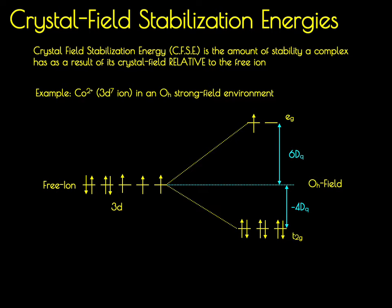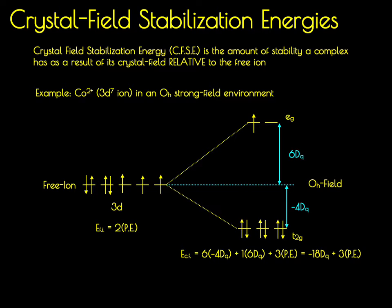In addition to those energies, we also have to consider an additional energy term: the pairing energy. Every time we place two electrons in the same orbital, we're going to have pairing energy associated with that. The free ion has an energy equal to two times the pairing energy. In the case of the octahedral field, the energy provided by the crystal field equals six times negative 4dq for the six electrons in the T2g orbitals, plus one times 6dq for the one electron in the Eg orbitals, plus three times the pairing energy — giving minus 18dq plus three times the pairing energy.